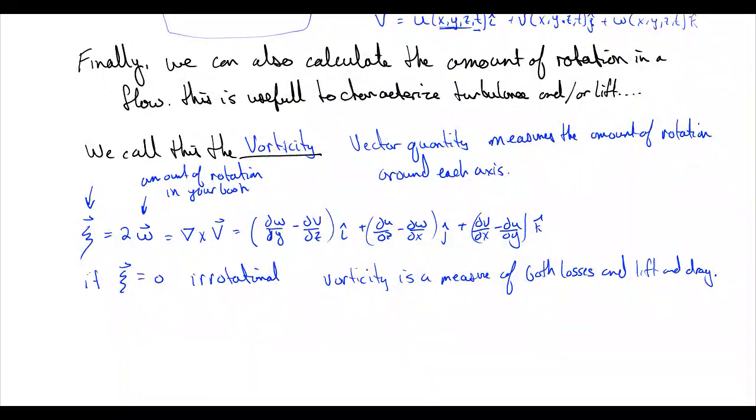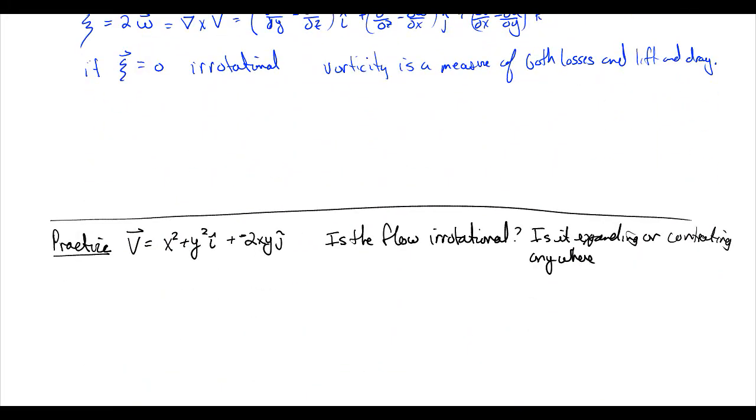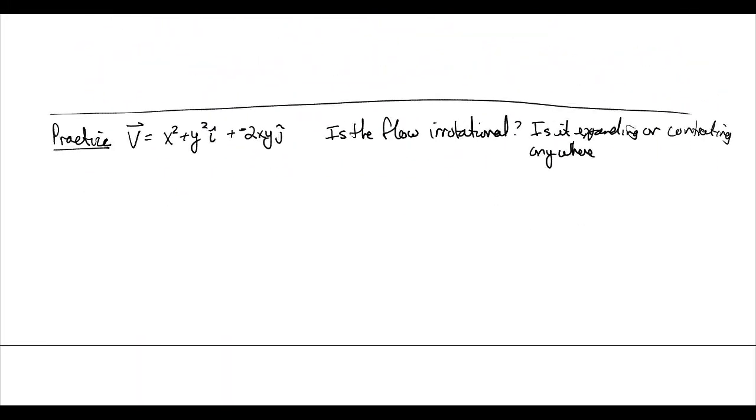So let's practice this. We have our velocity is equal to x squared plus y squared i-hat minus 2xy j-hat. We want to know, is this flow irrotational, and is it expanding or contracting? So let's first do the irrotational part.